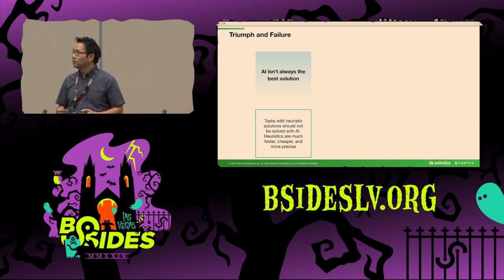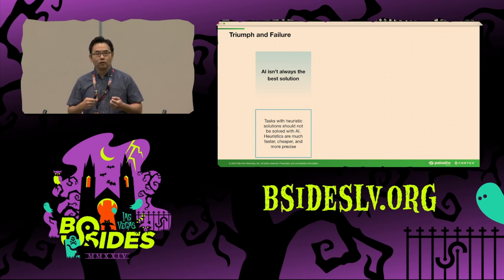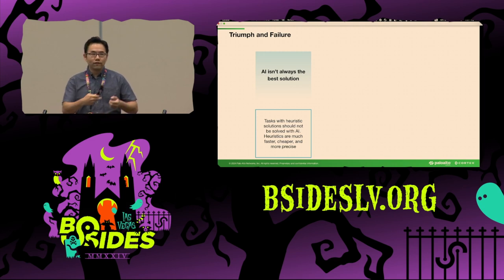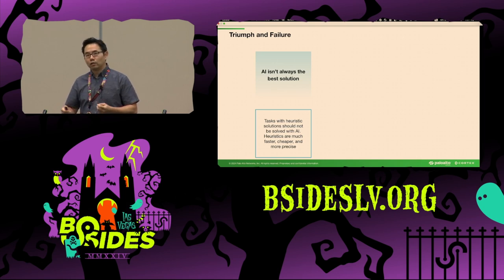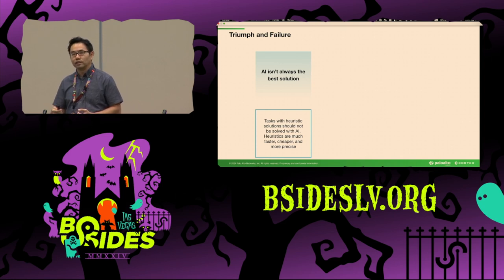First: AI isn't always the best solution. AI should not be used to solve simple problems with existing heuristic solutions — like sorting, finding paths, or solving equations. These problems have efficient and optimal existing solutions, and using AI to solve them costs more time and money. Don't shoot a mosquito with a shotgun: if a problem has an existing heuristic solution, always choose heuristic over AI.